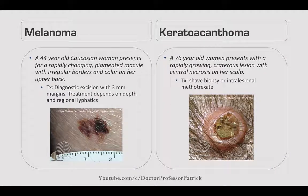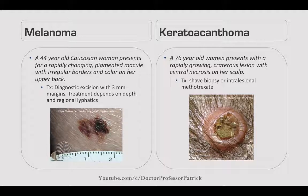Melanoma: a 44-year-old Caucasian woman presents with a rapidly changing pigmented macule with irregular borders and color on her upper back. Treatment is diagnostic excision with a 3-millimeter margin; further treatment depends on depth and regional lymphatic involvement. Keratoacanthoma, a subtype of squamous cell carcinoma: a 76-year-old woman has a rapidly growing craterous lesion with central necrosis on her scalp. Treat with shave biopsy or intralesional methotrexate.